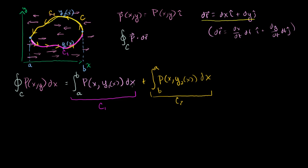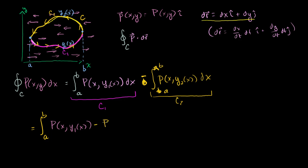Let's simplify this. If we swap A and B in the second integral, it turns that integral negative, so we change it to a plus from A to B and add a minus sign. Now we can rewrite the whole thing as a single integral from A to B of P(x, y1(x)) minus P(x, y2(x)), all times dx.